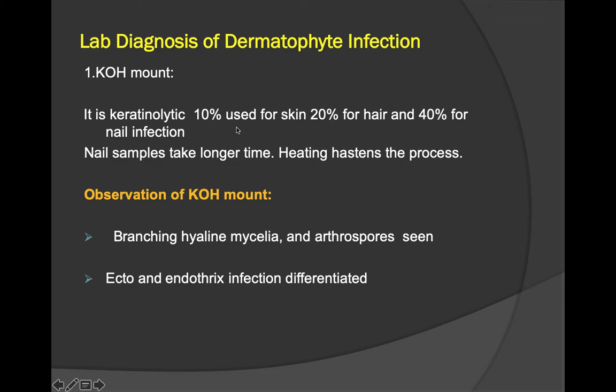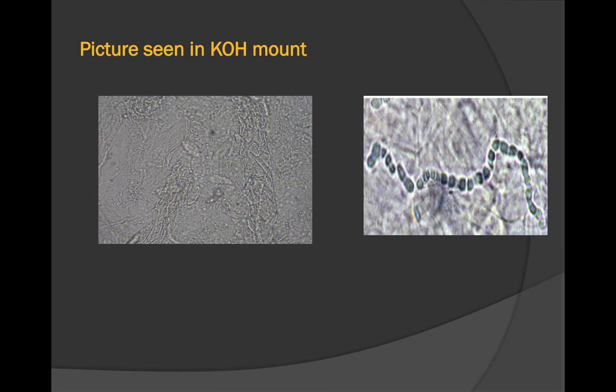KOH at 10% is used for skin, 20% for hair, and 40% for nail infection. Nail samples take longer, so higher concentration is used; heating hastens the process. Under KOH mount, branching hyaline mycelia and arthrospores are observed, and ectothrix versus endothrix infection can be differentiated. Branching hyphae and arthrospores are visible in the KOH mount picture.